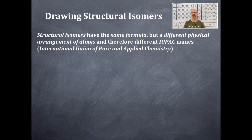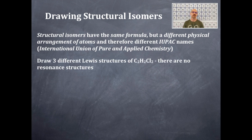Structural isomers have the same formula but a different physical arrangement of the atoms, and therefore different IUPAC names. The IUPAC names are the International Union of Pure and Applied Chemistry, and they set the rules and guidelines for naming any compound in chemistry.